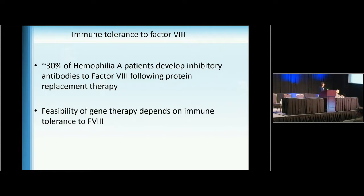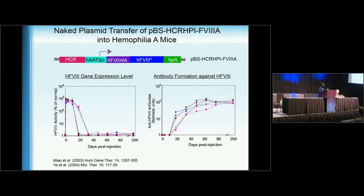What does this have to do with immune tolerance to factor VIII? As Drought already alluded, 30% of hemophilia A patients develop inhibitory antibodies to factor VIII following protein replacement therapy. The viability of a successful gene therapy really depends on whether immune tolerance to factor VIII can be induced. When you hydrodynamically inject a factor VIII plasmid into hemophilia A mice, you obtain very high levels of factor VIII expression initially; however, the level drops quickly, correlating with antibody formation. This is a good model to study modulation of immune responses to factor VIII.